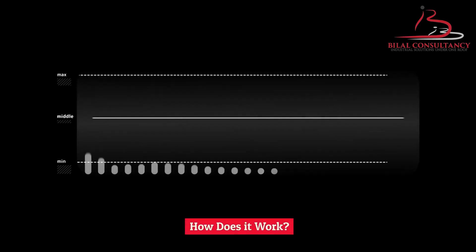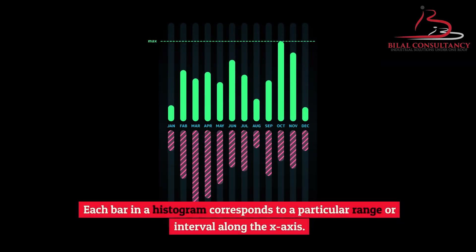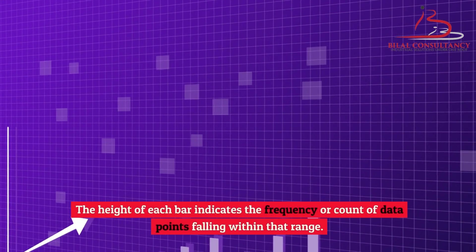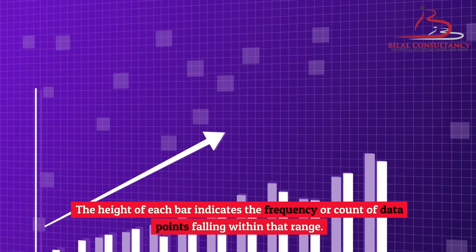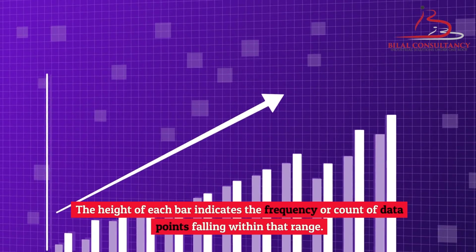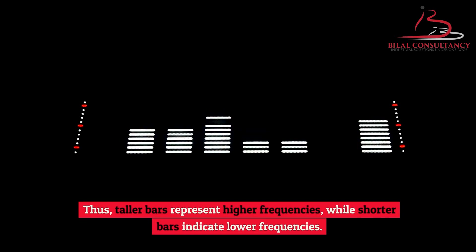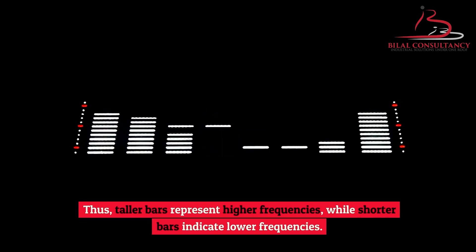How does it work? Each bar in a histogram corresponds to a particular range or interval along the x-axis. The height of each bar indicates the frequency or count of data points falling within that range. Thus, taller bars represent higher frequencies, while shorter bars indicate lower frequencies.